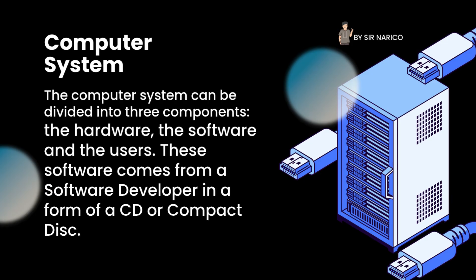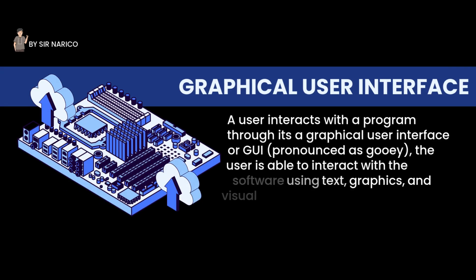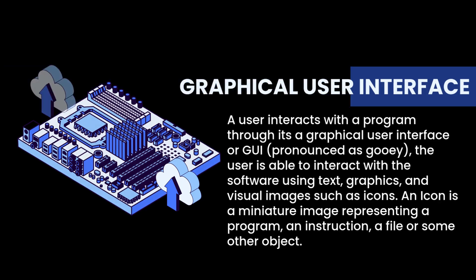Software comes from a software developer in the form of a CD or compact disc. A user interacts with a program through its graphical user interface or GUI. The user is able to interact with the software using text, graphics, and visual images such as icons. An icon is a miniature image representing a program, an instruction, a file, or some other object.